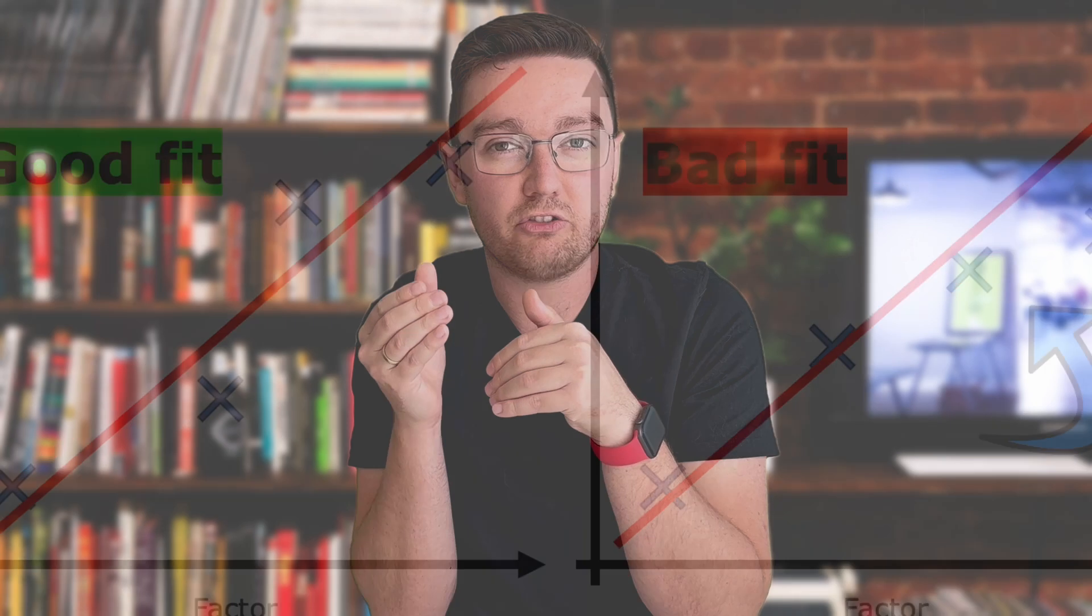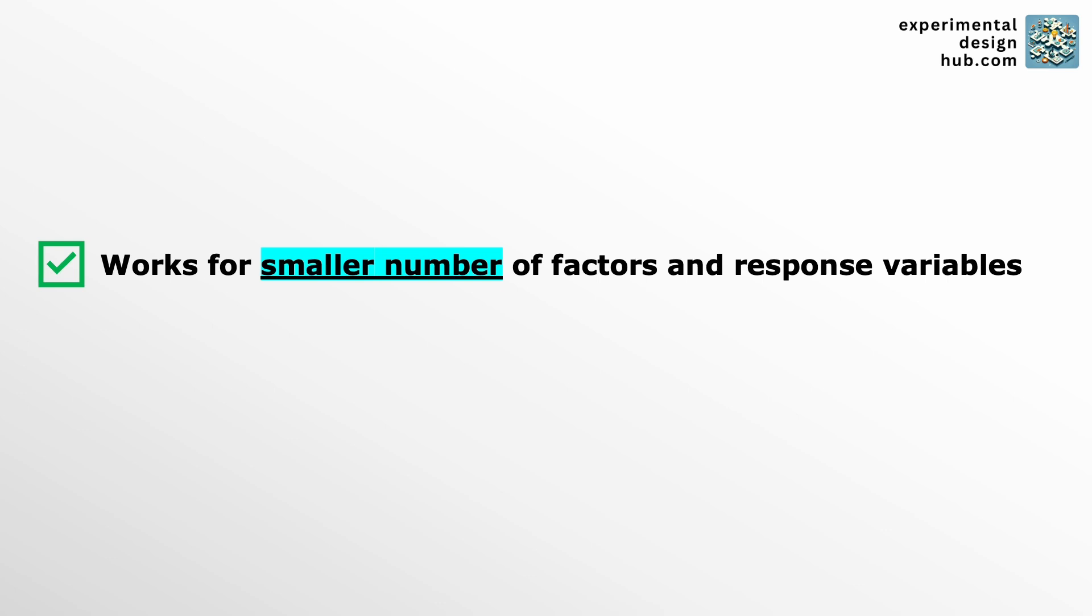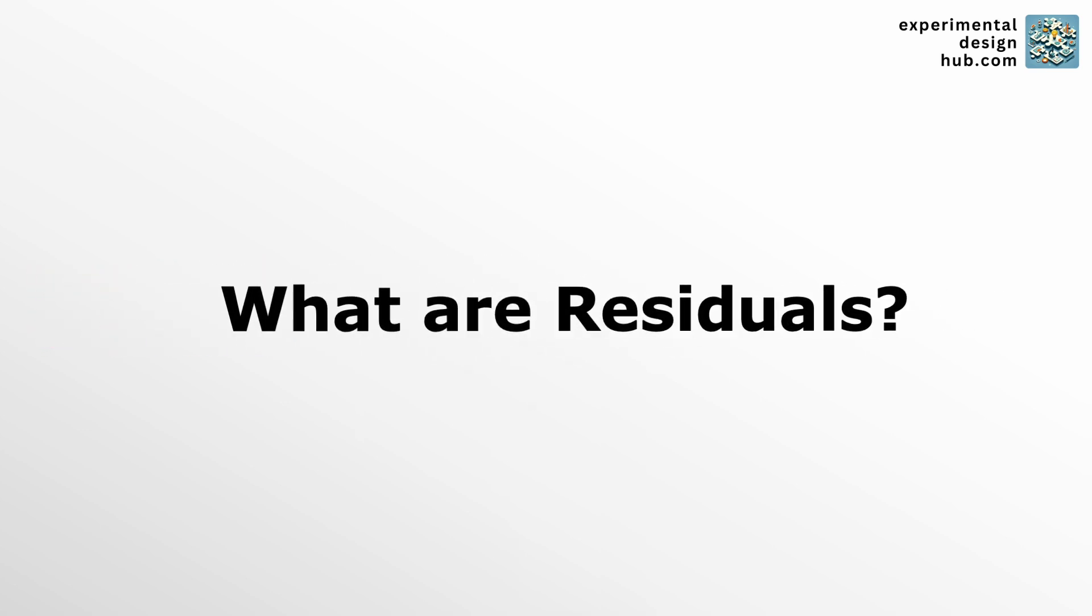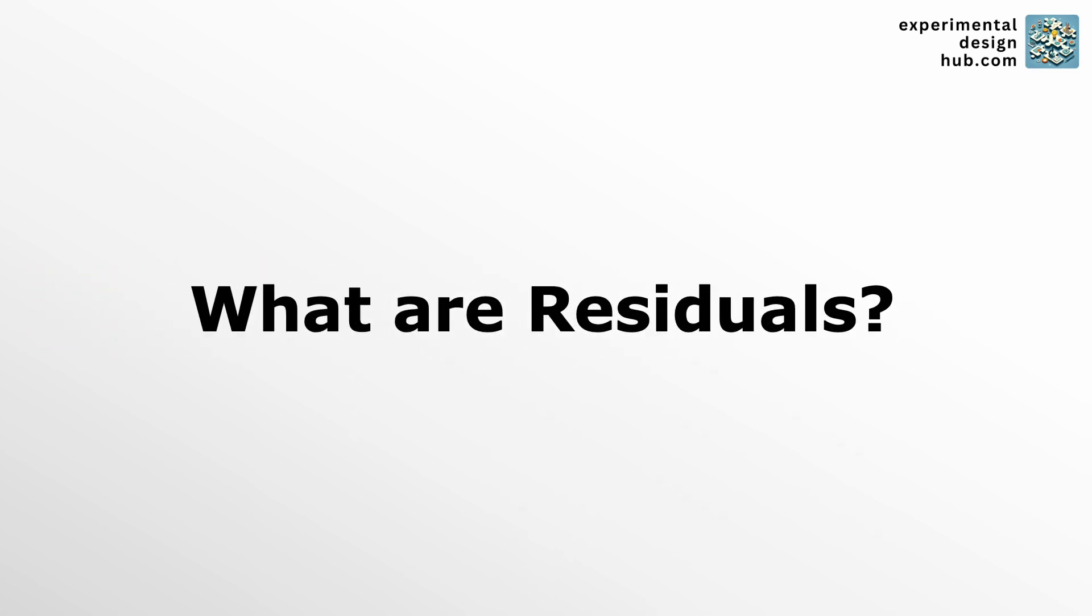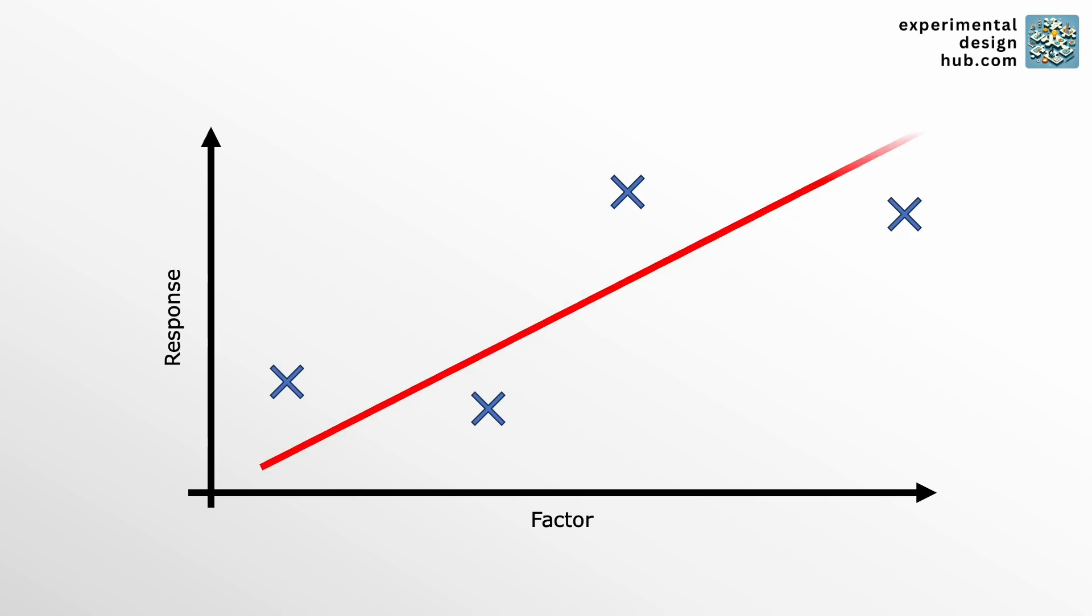Now, this was a relatively easy example because we only had one factor to look at. But as the complexity of your system increases, the visual comparison alone won't do the job, and that's where residual analysis comes into play. So what exactly are residuals? Residuals are simply the difference between what you observed and what your model predicted. They are key in understanding just how accurate your model really is.